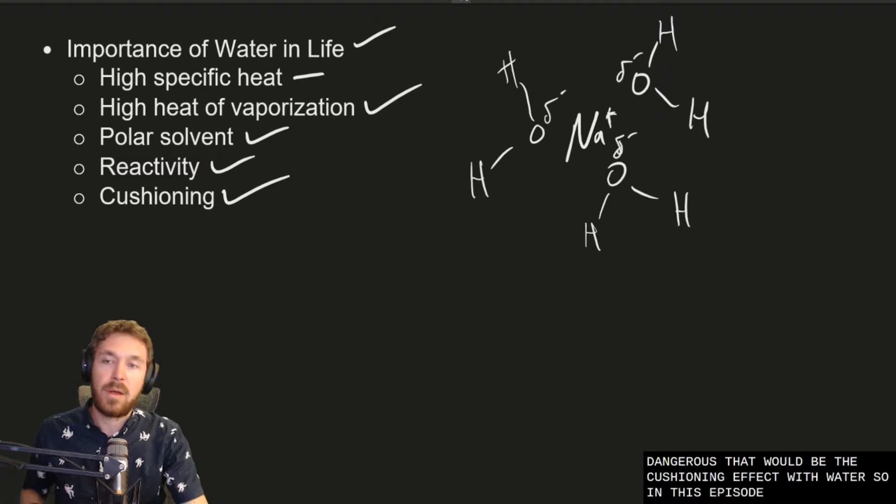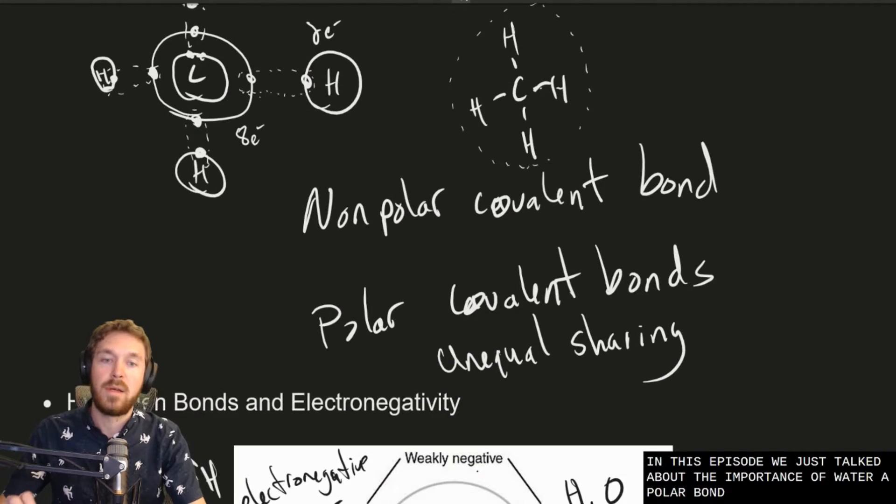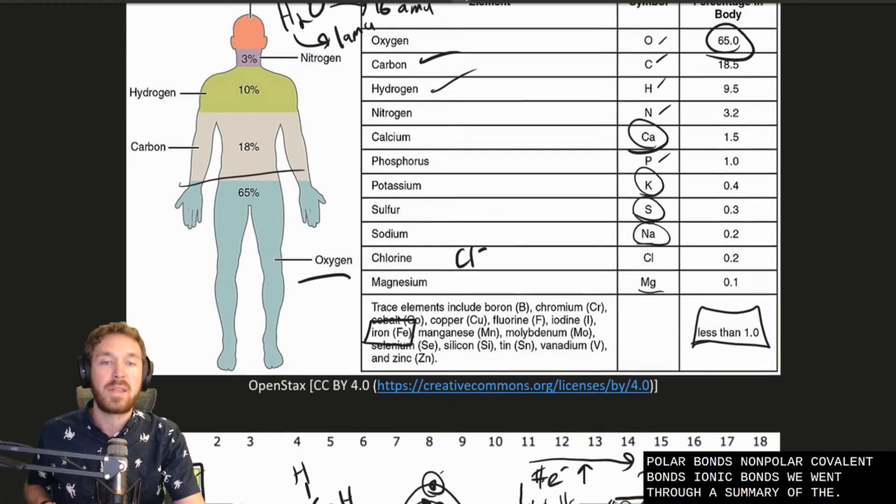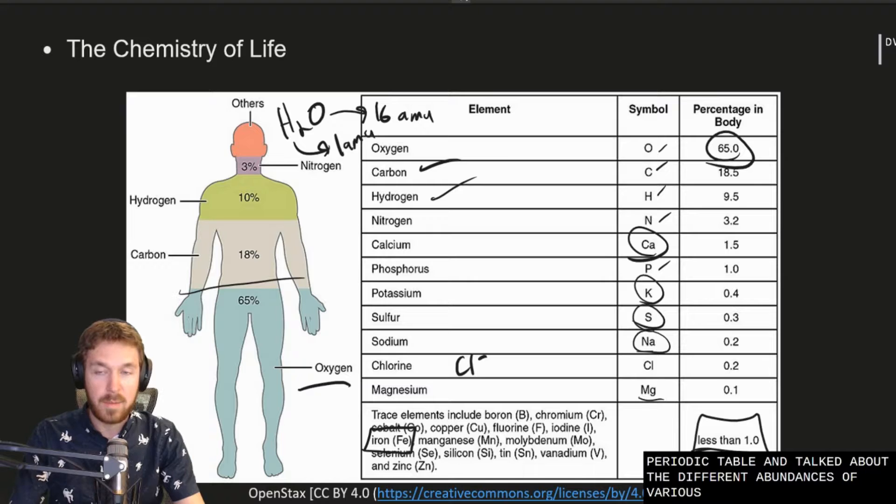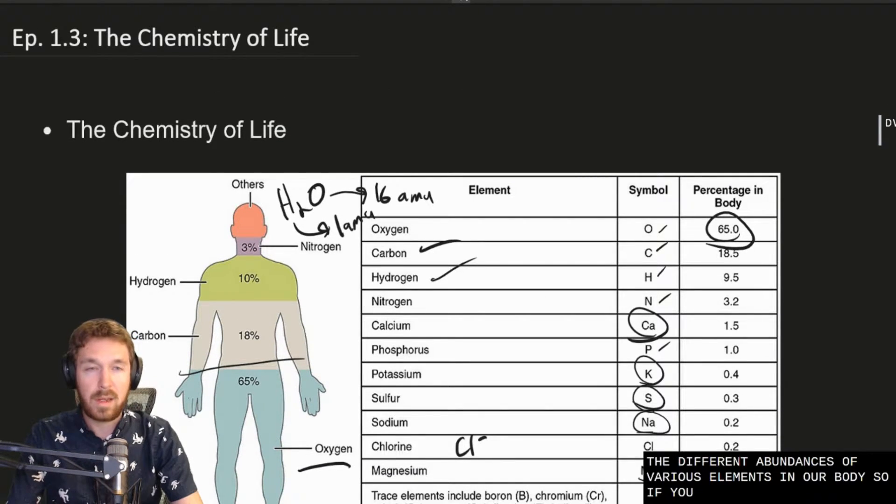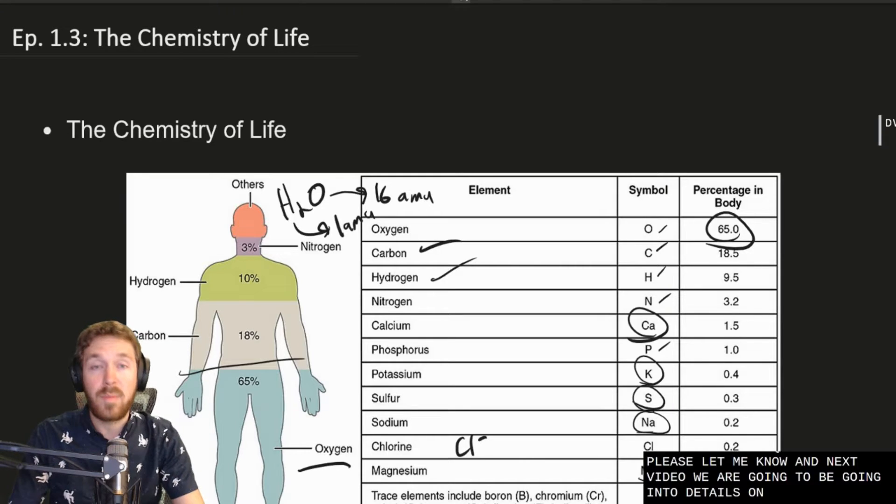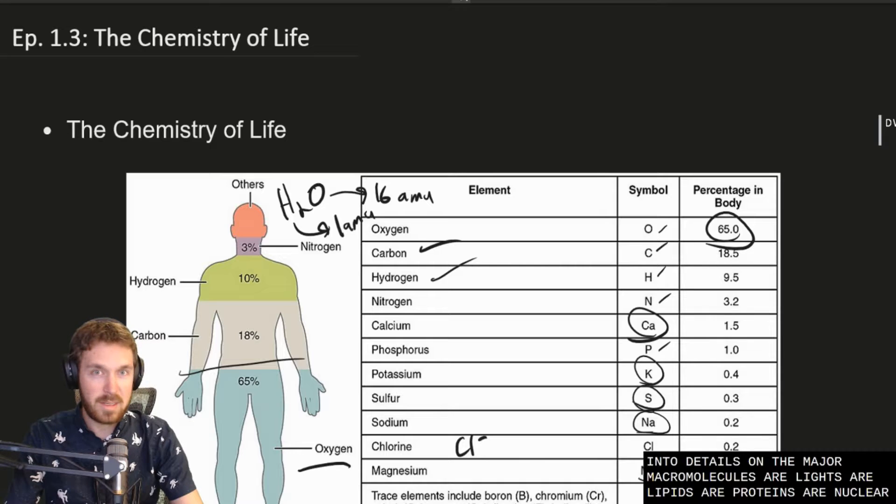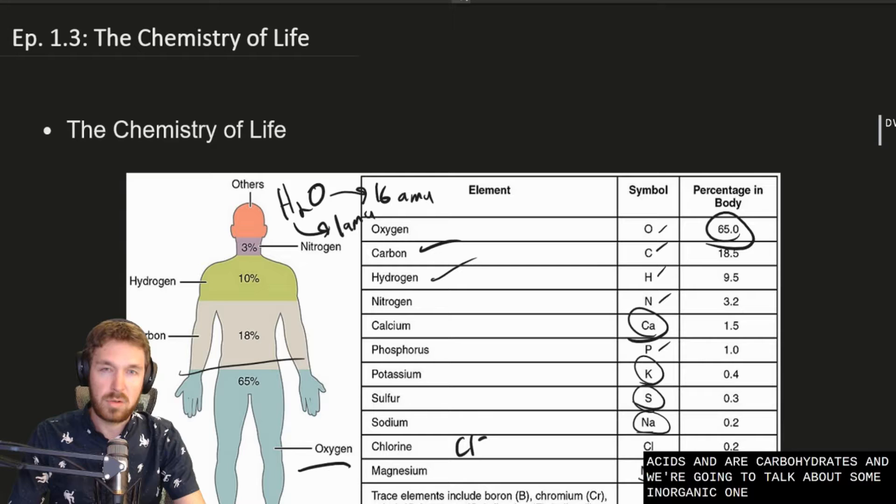So in this episode, we just talked about the importance of water, polar bonds, nonpolar covalent bonds, ionic bonds. We went through a summary of the periodic table and talked about the different abundances of various elements in our body. So if you have any questions, please let me know. In next video, we are going to be going into details on the major macromolecules of life. So our lipids, our proteins, our nucleic acids, and our carbohydrates. And we're going to also talk about some inorganic ones too. All right. Hope you have a great day.